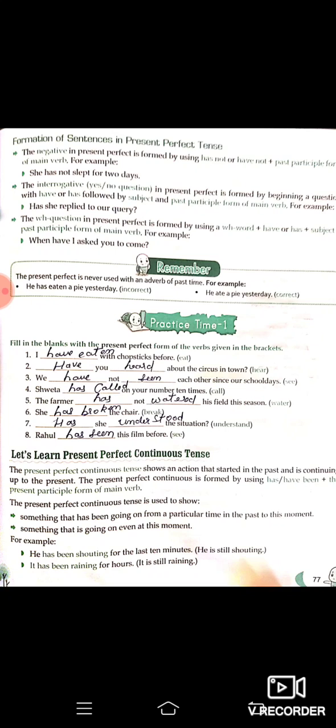Let's learn present perfect continuous tense. The present perfect continuous tense shows an action that started in the past and is continuing up to the present. Kuch aisi action jo past mein shuru hui hai woh present tak chali hai ya abhi tak chal rahi hai.